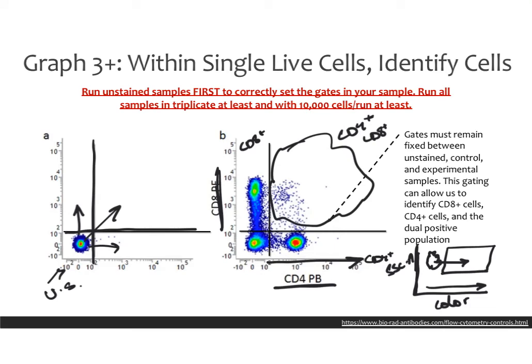The unstained control is very, very important, and you must run it first to correctly set the gates. You have to make sure that every sample is run in triplicate and that you have at least 10,000 cells per run to be able to draw real conclusions. Your gates must remain fixed — once you've set the gates on your unstained sample, they are not going to change. You have to show people these pictures to show that the gates haven't changed and that you've kept everything the same, and that's how you can identify the populations.